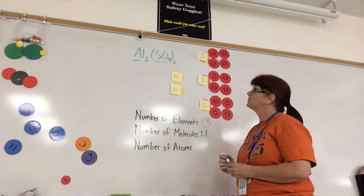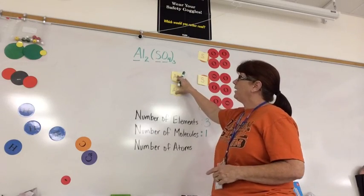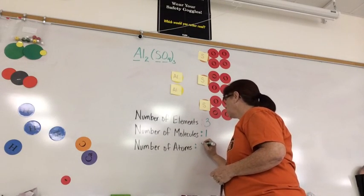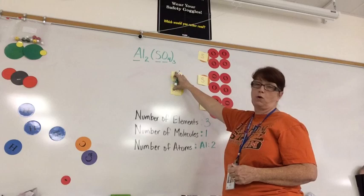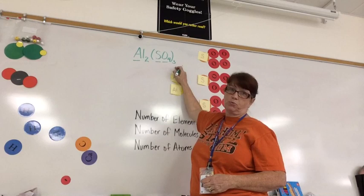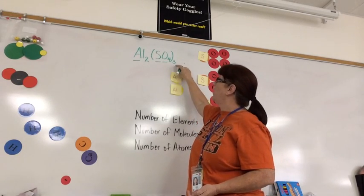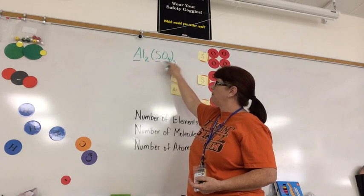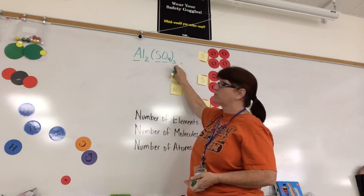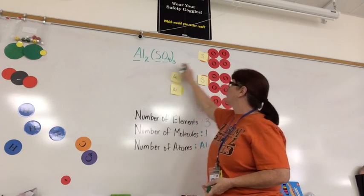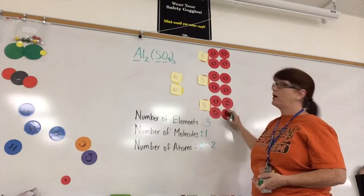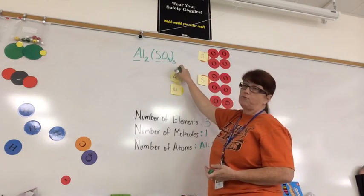Number of atoms. This is where it becomes a little tricky. Remember that this 2 here, the subscript 2, applies to the Al. So for aluminum, I have 2 atoms. When I have parentheses and a subscript that follows the parentheses, it's kind of like the distributed property in math, where I have to take this number and multiply it by each thing that's inside the parentheses. Or you can think of this as I have 3 sets of SO4, which is what I've shown here. I have 1 SO4, 2 SO4, and 3 SO4.